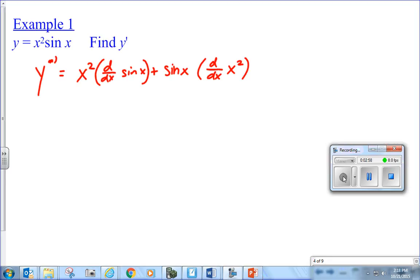Times the derivative of the first. And if you get good at this, you don't have to write the d/dx sine of x, you can just put the derivative there. So, I've got x squared. What's the derivative of the sine? Cosine.